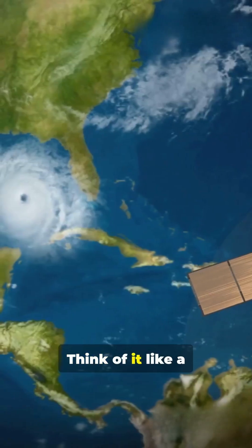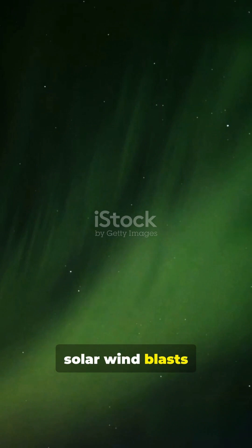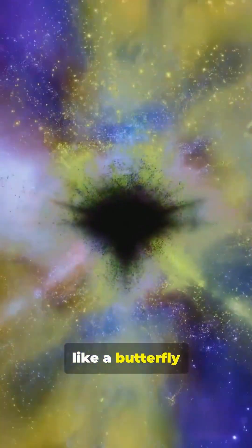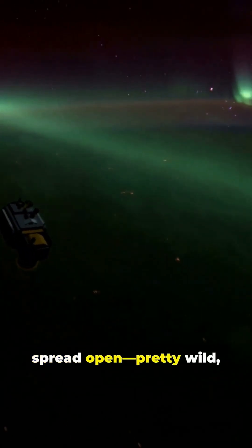There's a massive coronal hole in the Sun's atmosphere right now. Think of it like a giant gap where solar wind blasts out faster than usual. This time it actually looks like a butterfly with its wings spread open.